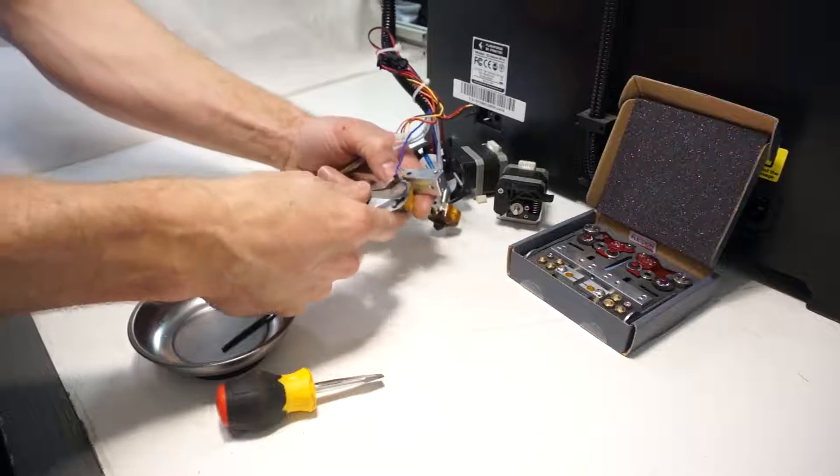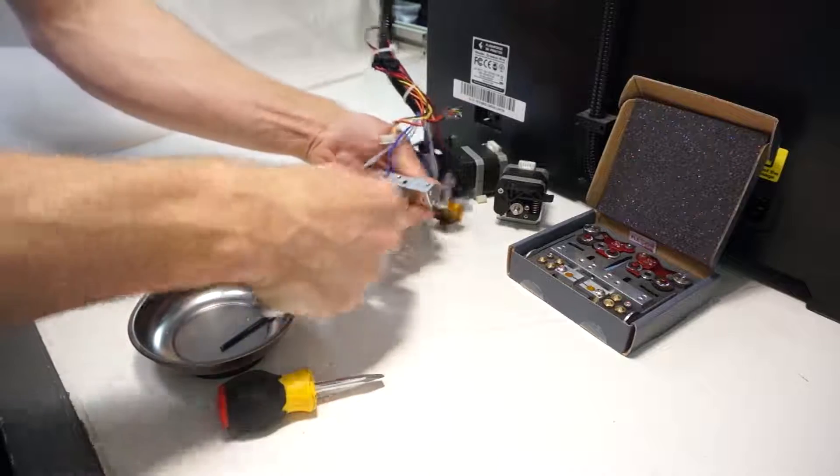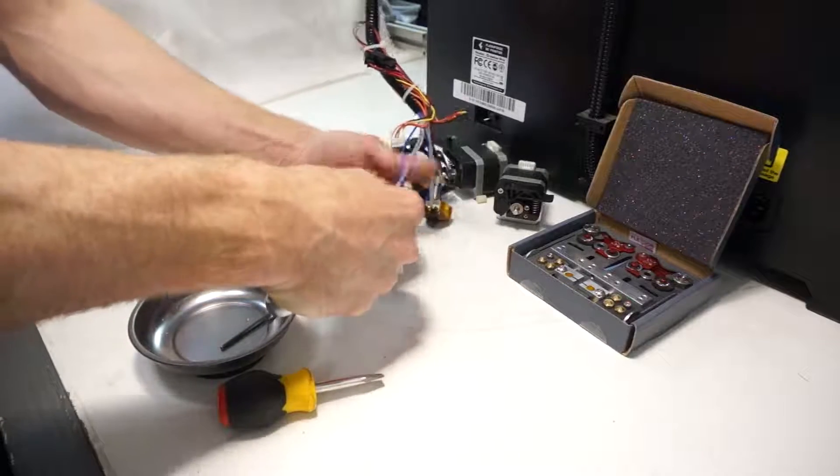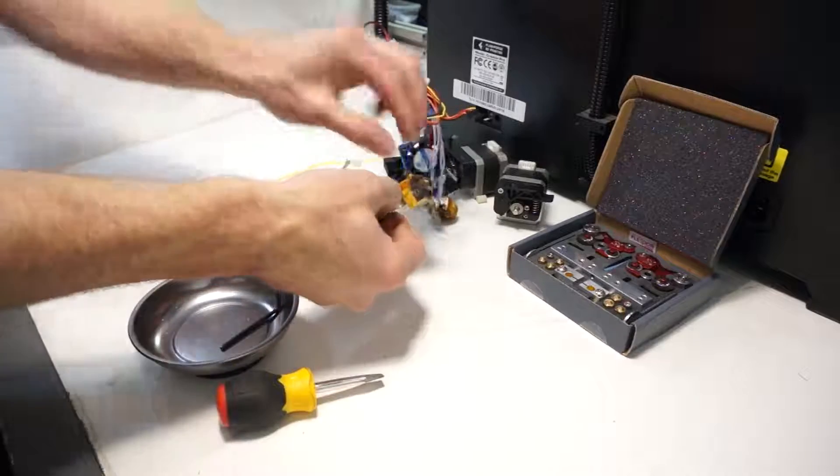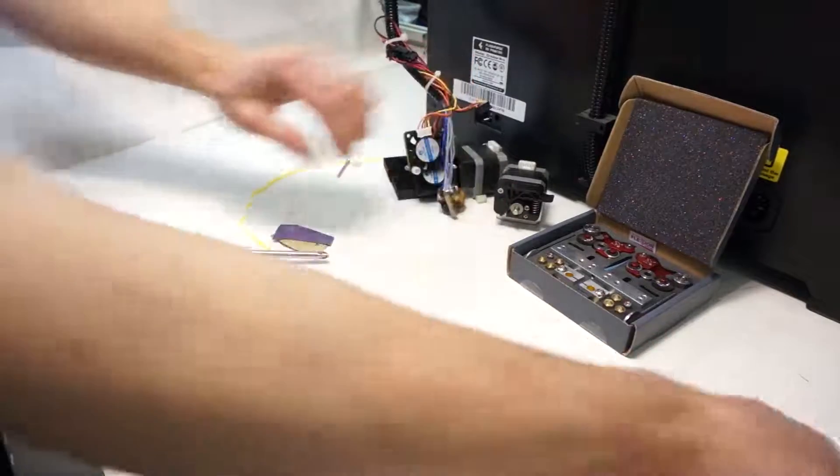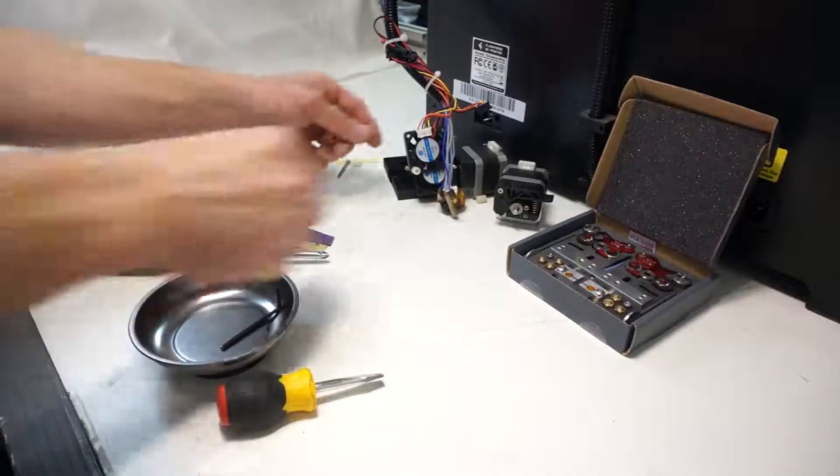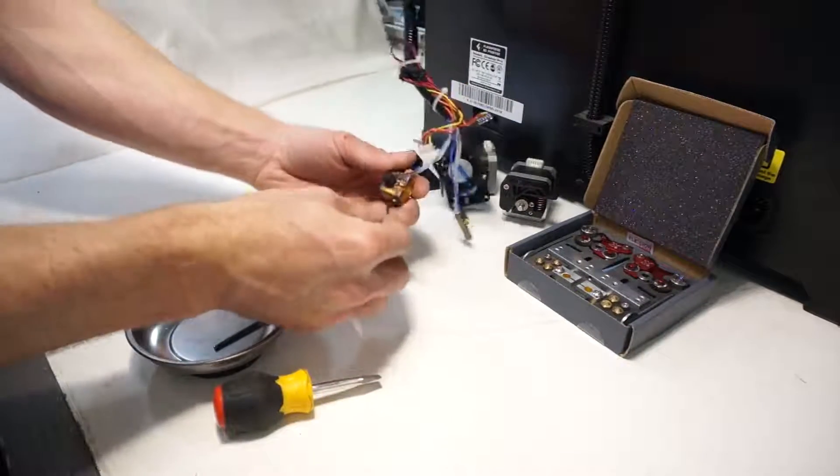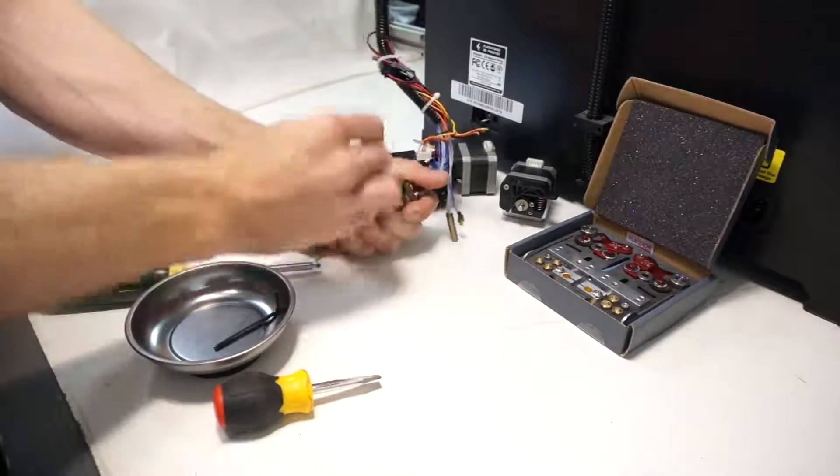So after you've removed the heater, you can remove the temperature sensor with a crescent wrench. And rather than turning the wrench, grab hold of the temperature sensor with the wrench and turn the entire hot end assembly. This way you won't strain the temperature sensor.